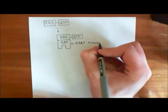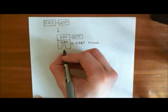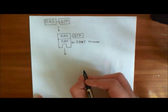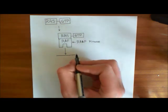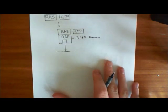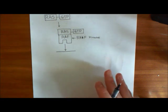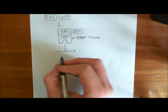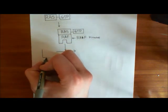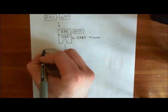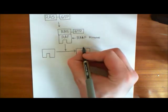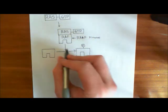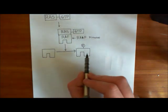Active RAF kinase then adds a phosphate group onto another kinase enzyme, phosphorylating it and converting it from an inactive state to an active state. So the job of RAF kinase is to activate this next kinase downstream.